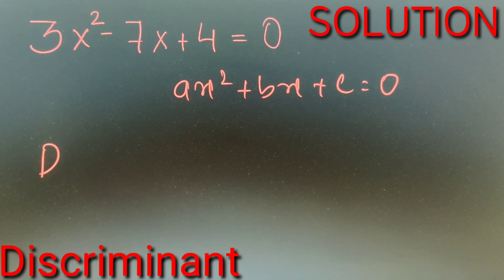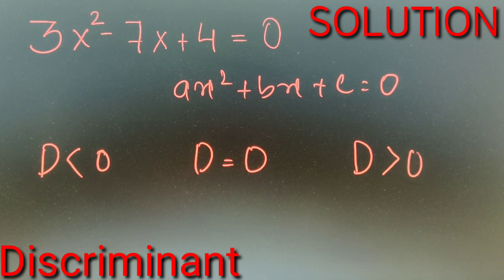So if the discriminant is less than 0, then there are no real solutions. If the discriminant is equal to 0, then there are two real solutions and both of them are equal. And if the discriminant is greater than 0, then there are two real solutions and both of them are unequal.